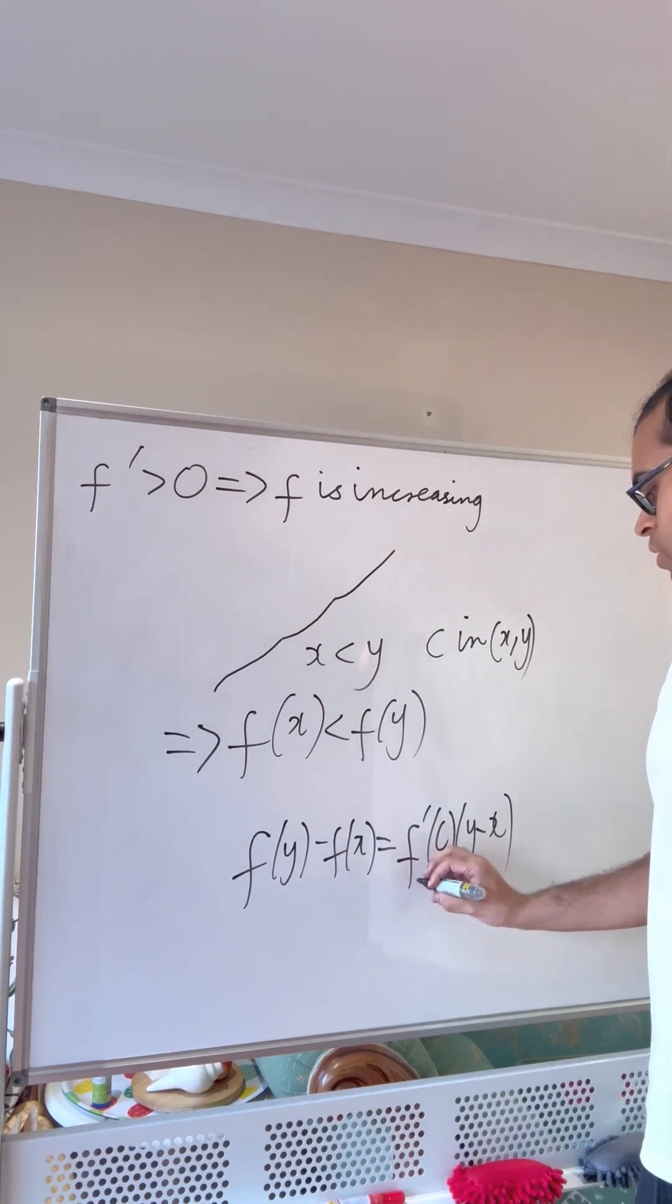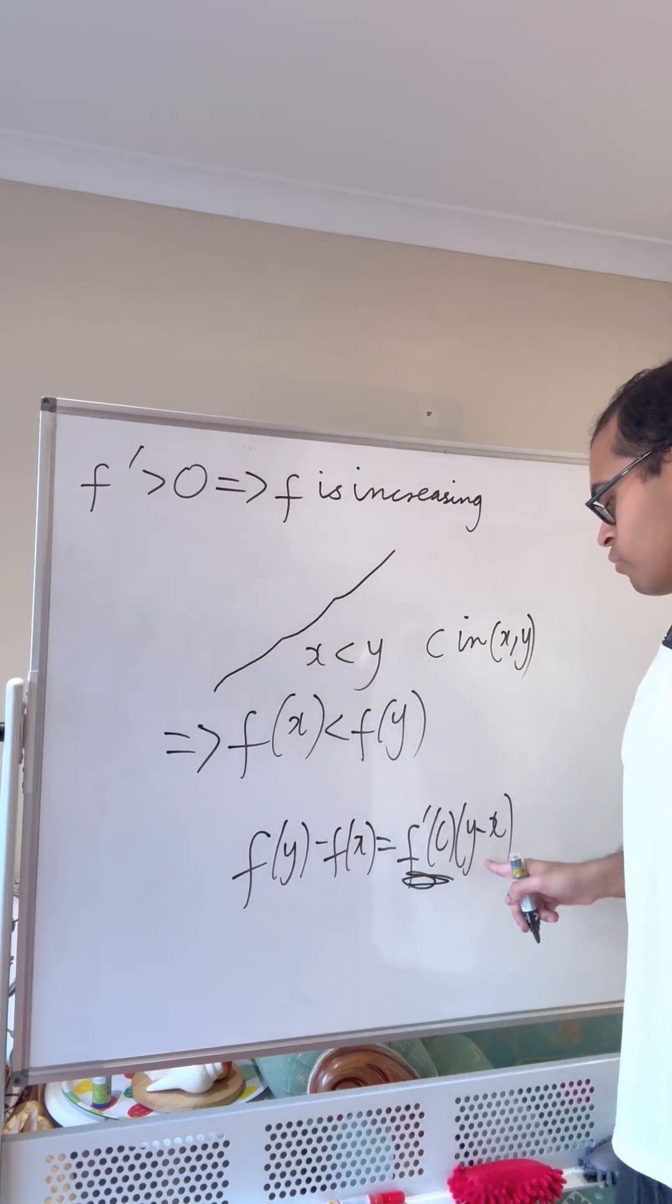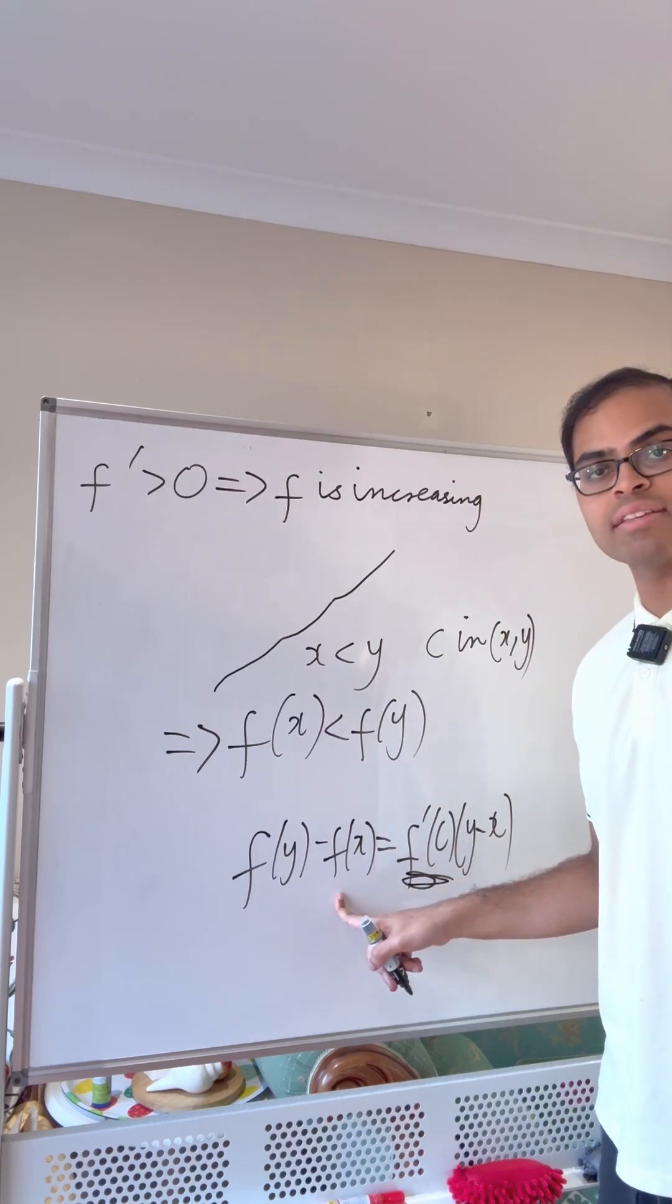But now we know that because f prime of c is always positive and y minus x is positive, x is less than y, that implies f of y is greater than f of x.